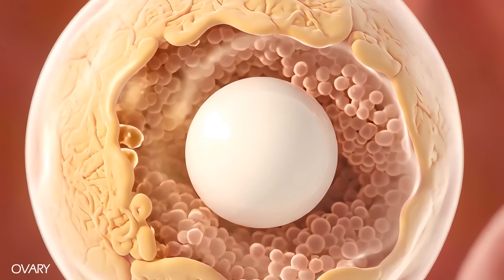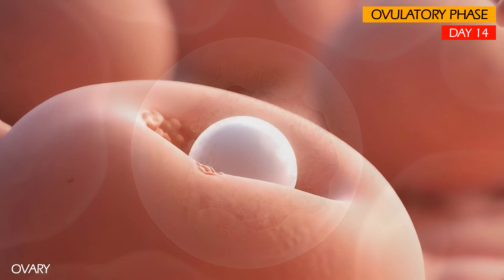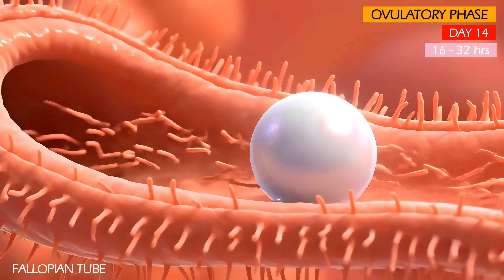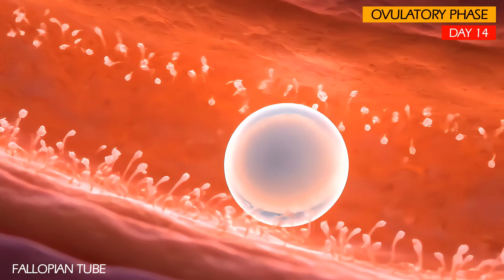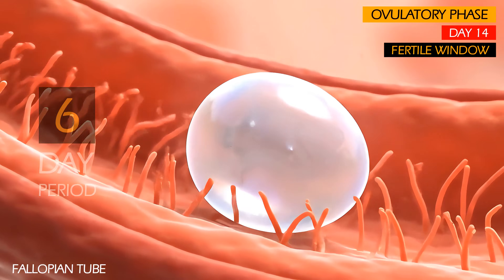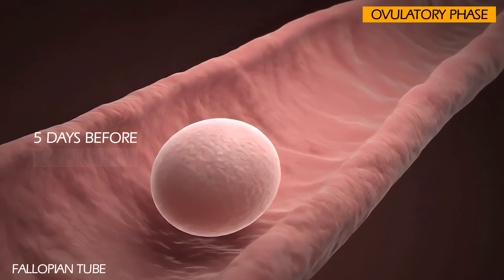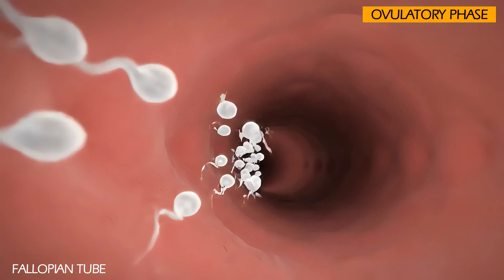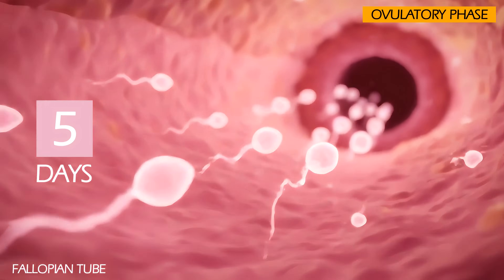For an average 28-day menstrual cycle, the ovulatory phase usually takes place around day 14. This is the shortest and most dramatic phase of the cycle, lasting only 16 to 32 hours. The released egg remains viable for fertilization in the ampulla of the fallopian tube for a brief period called the Fertile Window — a 6-day period when you are most likely to get pregnant, including the 5 days leading up to ovulation and the day of ovulation itself. Sperm can survive within the female reproductive tract for up to 5 days, so the chances of getting pregnant decrease significantly after this time.